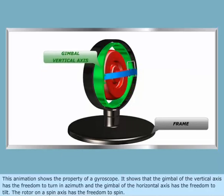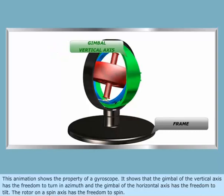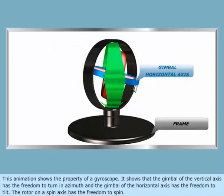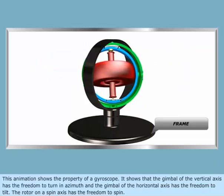This animation shows the property of a gyroscope. It shows that the gimbal of the vertical axis has the freedom to turn in azimuth, and the gimbal of the horizontal axis has the freedom to tilt. The rotor on a spin axis has the freedom to spin.